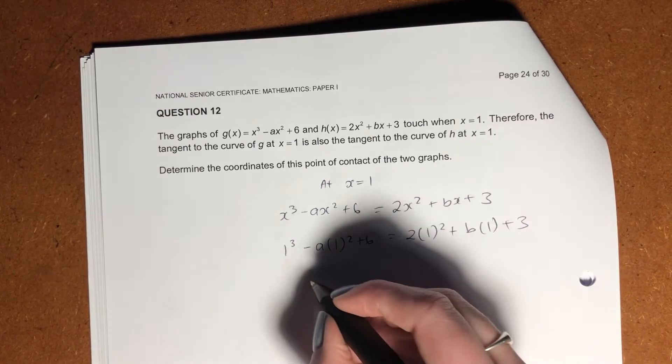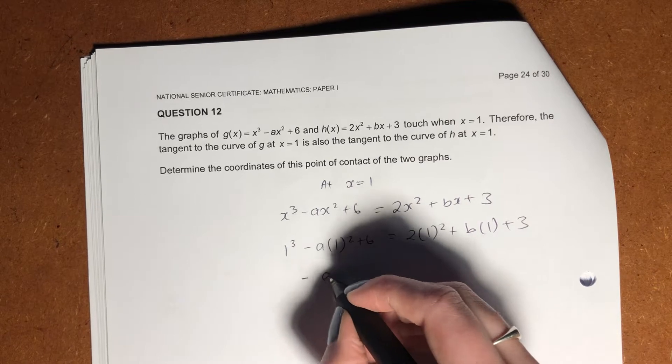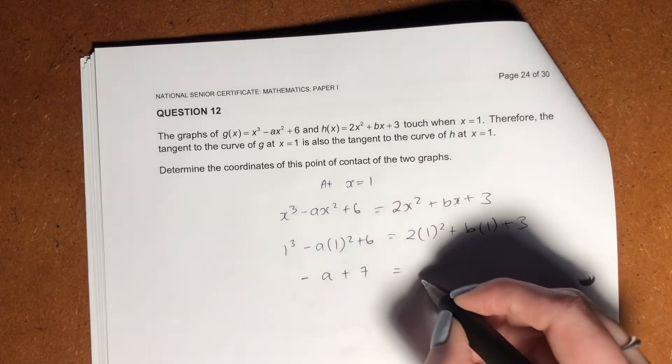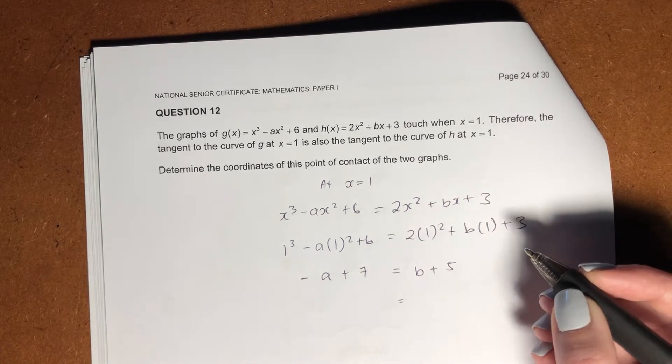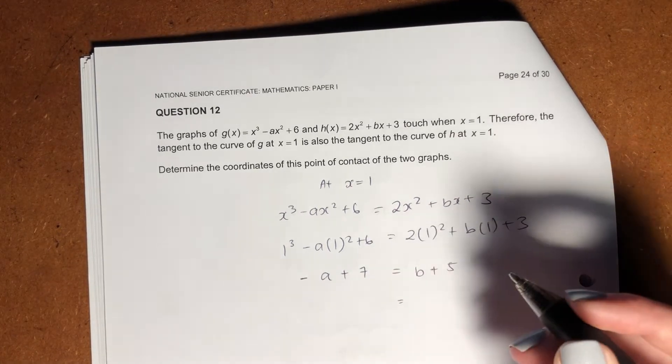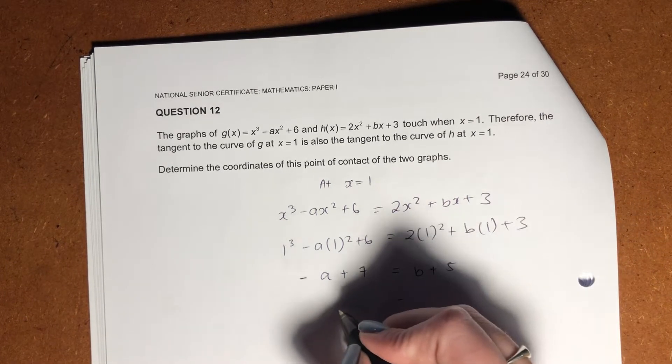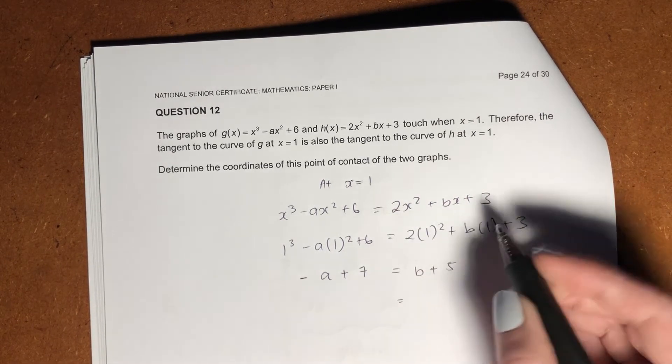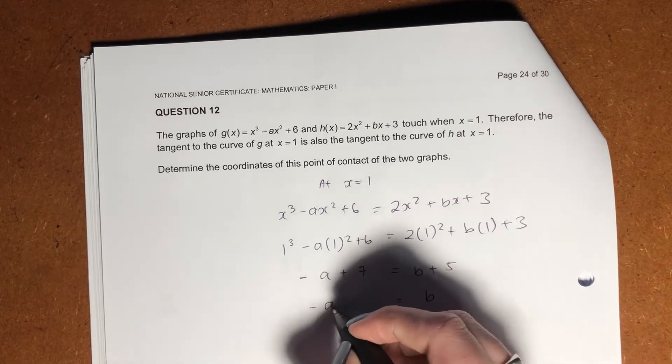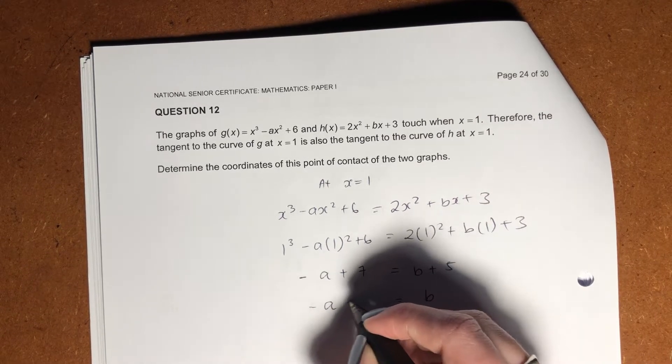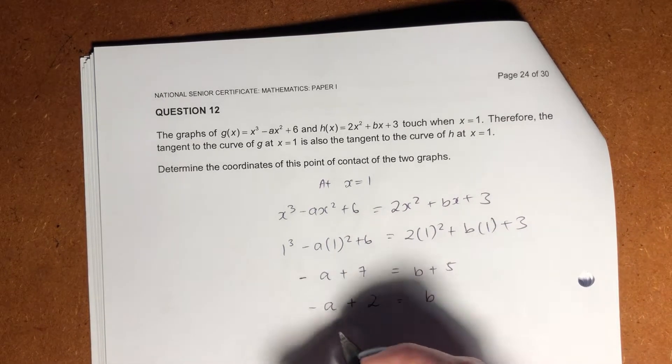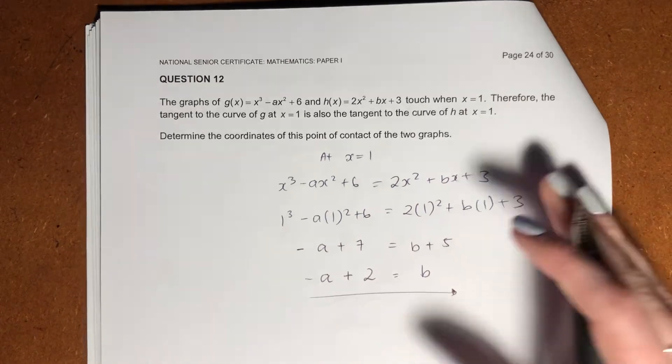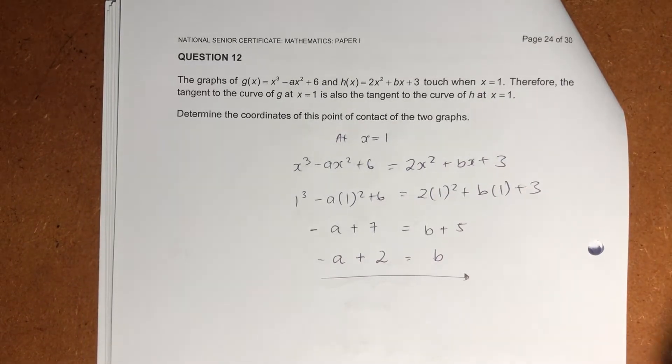So let's just solve this out. So this is going to be negative a plus 7. This is going to be negative a plus 5. So then we effectively have here, if we do this in terms of b, I'm just going to say, or we can do it in terms of b, b equals negative a, right, bring that across, plus 2. Okay, that's what b equals. So that's all good and well, but now we have two unknowns. We know that when we have two unknowns, we need two equations because that's how simultaneous equations work.